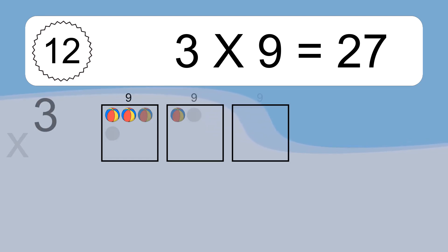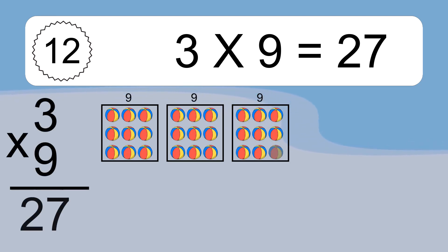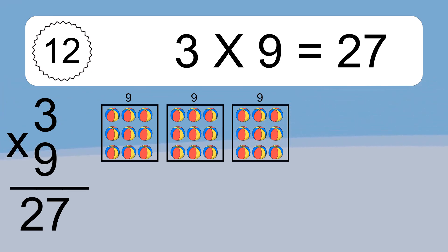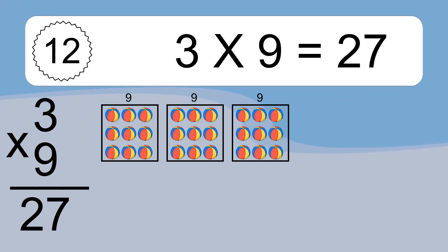We have 3 boxes, and each box has 9 colorful balls inside. If you count all the balls in all the boxes together, you will have 3 x 9 balls. This equals 27 balls.